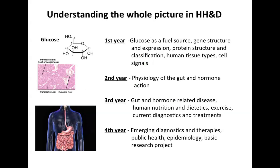In first year you would study how glucose is used as a fuel source by cells — cellular metabolism. You would also look at other processes important for cell function: gene structure and expression, genetics, protein structure, protein synthesis, and human tissue types to compare different types of tissues. For example, these are cells from the pancreas that produce insulin.